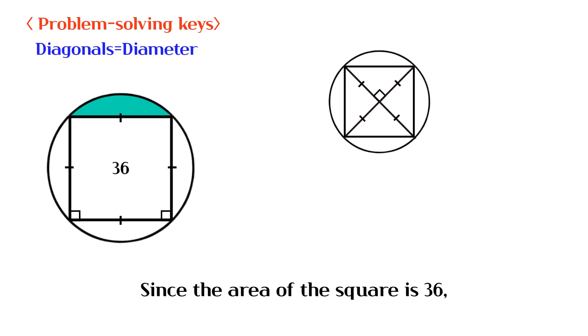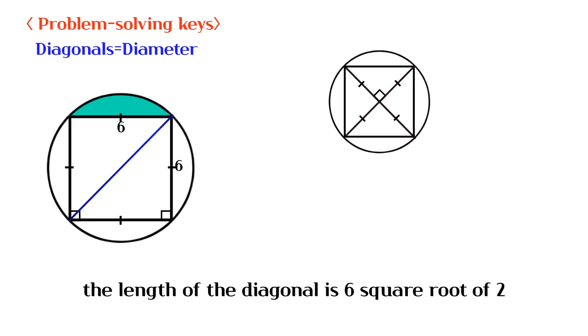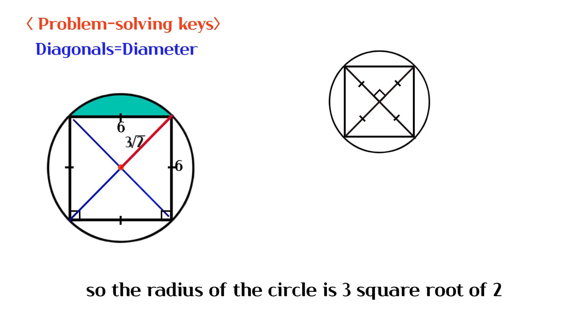Since the area of the square is 36, the length of the diagonal is 6 square root of 2. So the radius of the circle is 3 square root of 2.